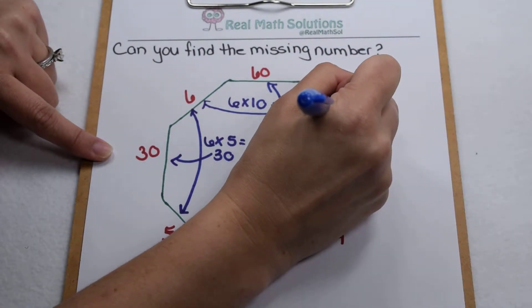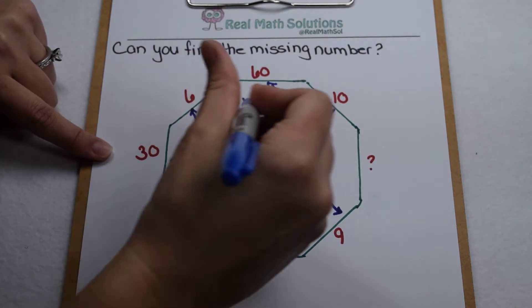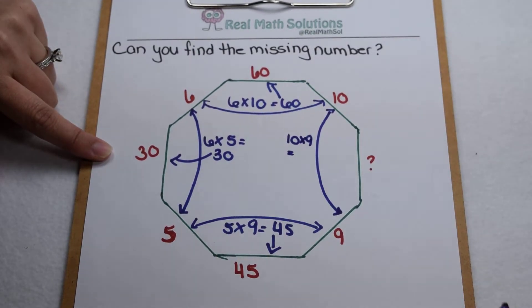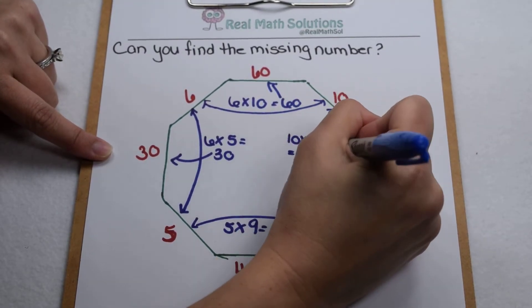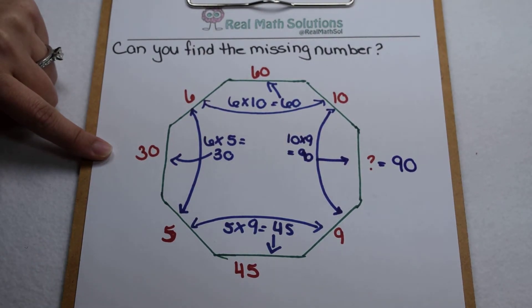So using that pattern, that means I should be able to multiply together my 10 and 9 to give me my missing value. When I multiply together 10 and 9, that gives me 90. So that means our missing value in our octagon should be 90.